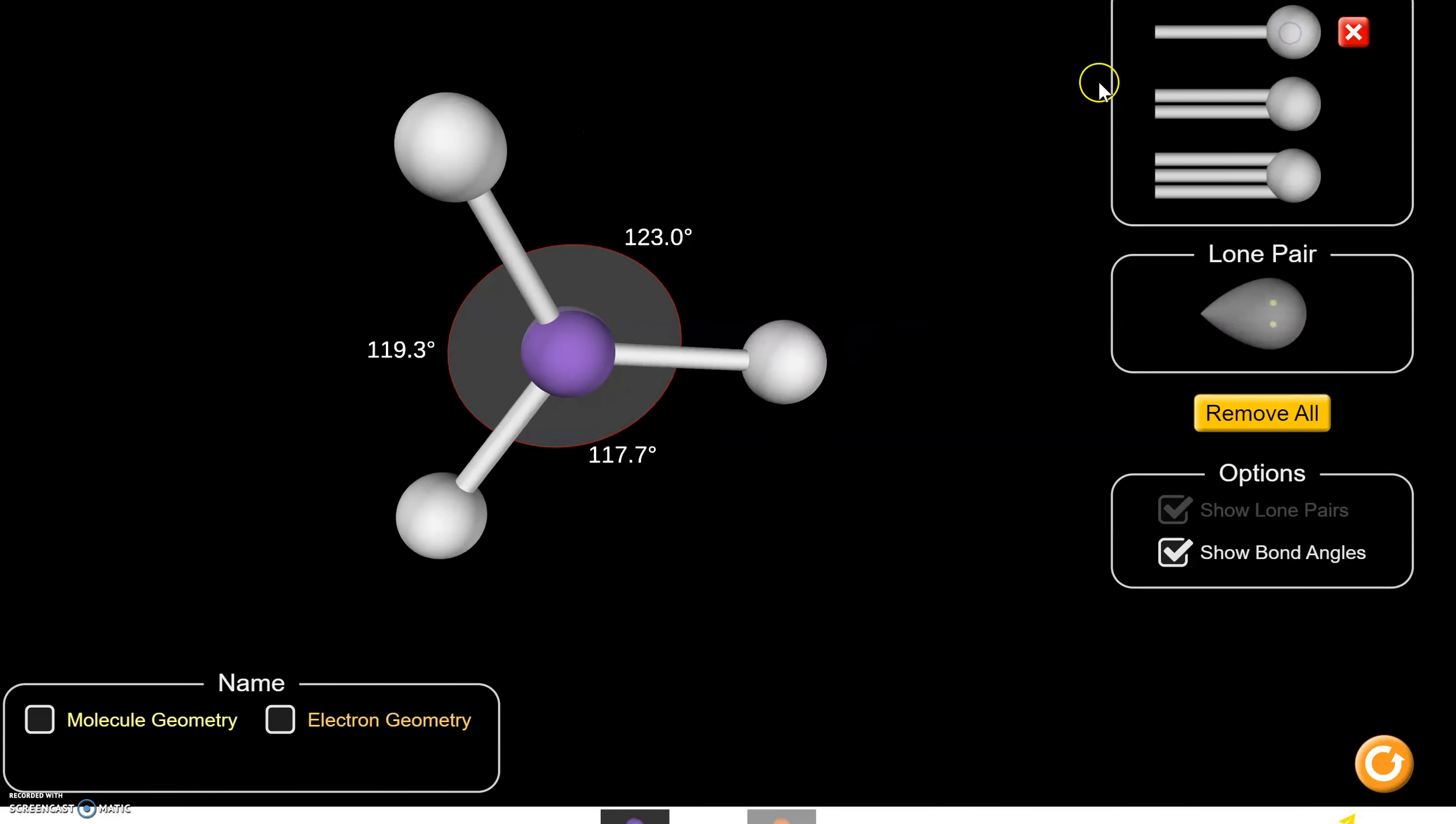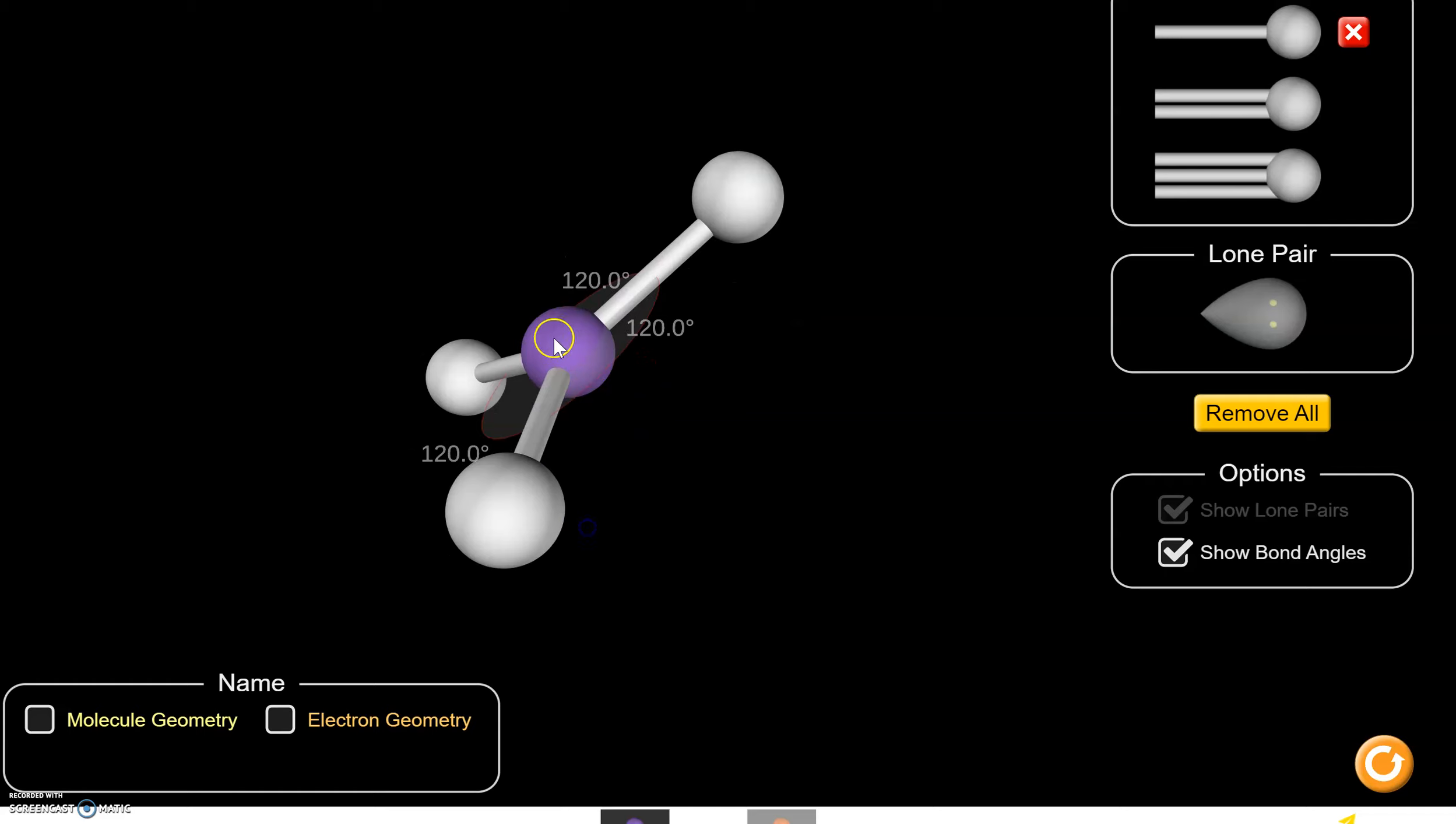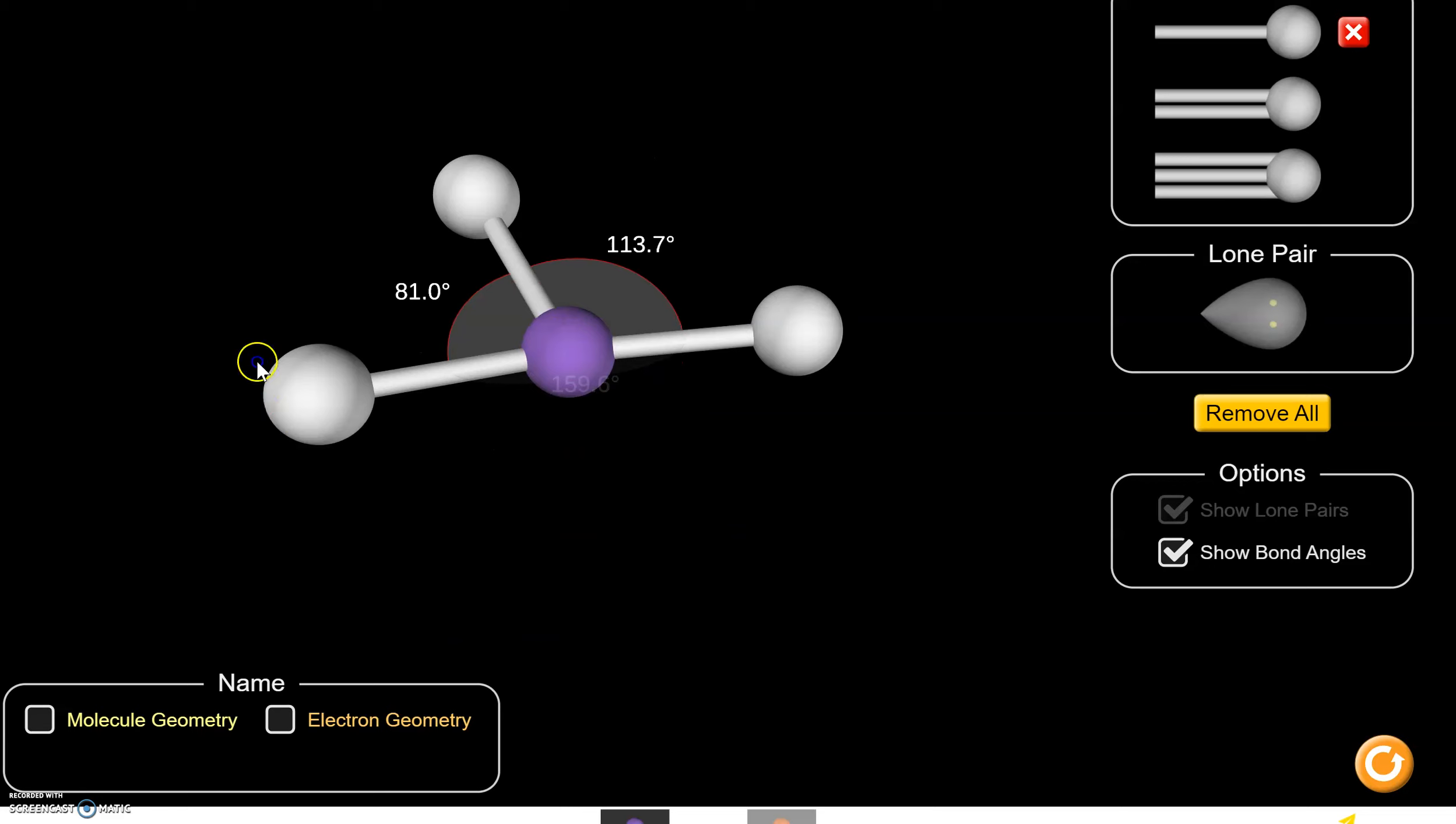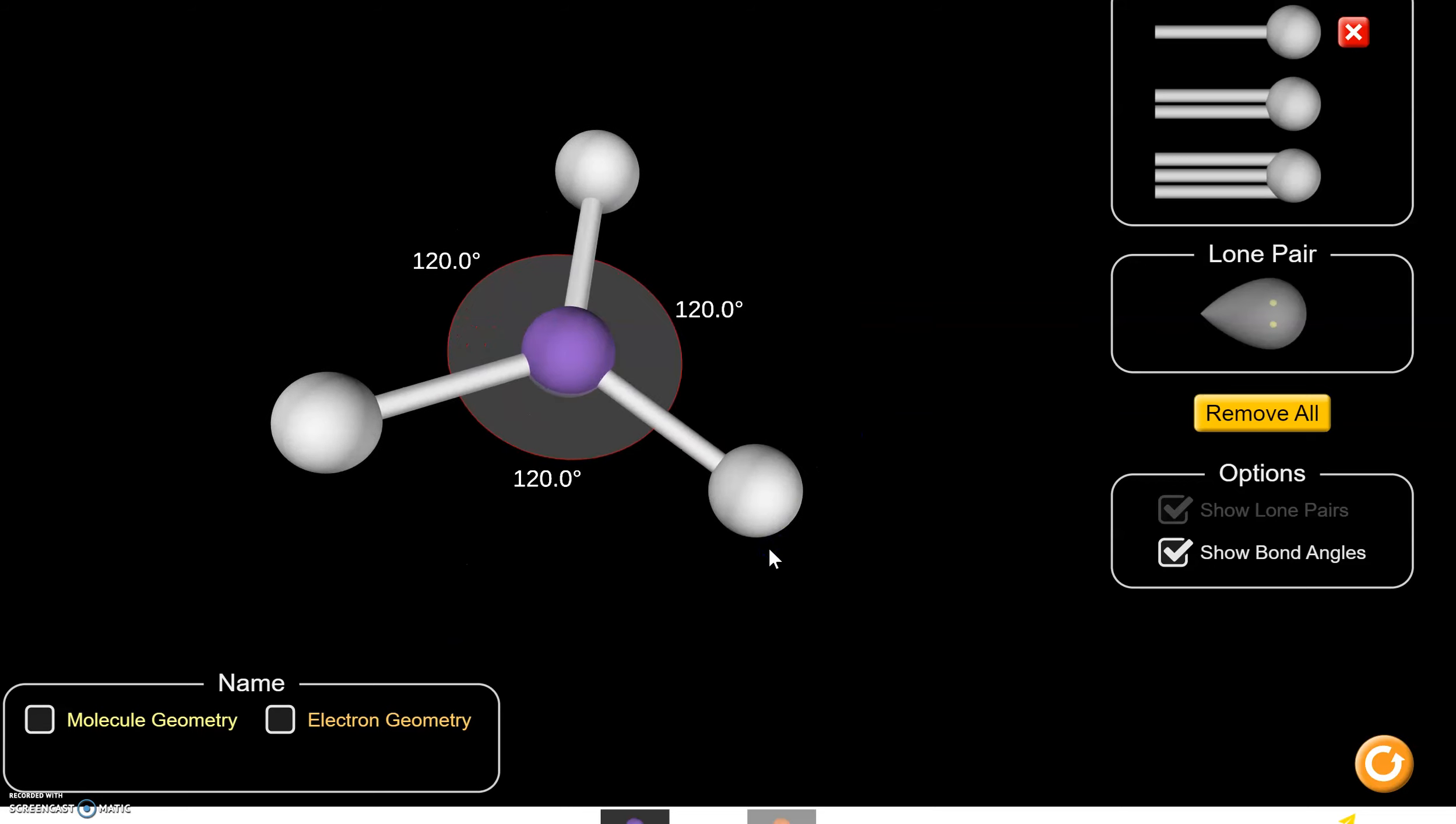One, two, three atoms bonded to our central. And these atoms are trying to get as far away from each other as they can. And that is an angle of 120 degrees. So however we turn this, these are still going to be as far away as they possibly can. Let's do one more and I think you'll get the hang of it.